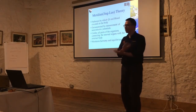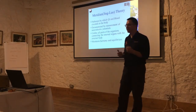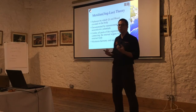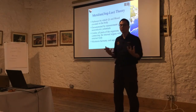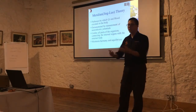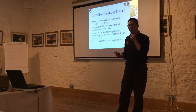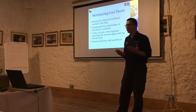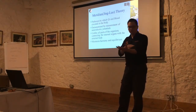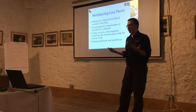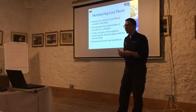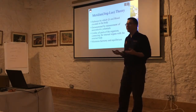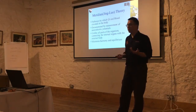The meridian system unifies all parts of the organism, connecting the internal organs to the external body. The surface of the skin is connected to the inside, and that's a very, very different concept. For example, there are bits of skin that are connected to your liver, and it maintains harmony and equilibrium.